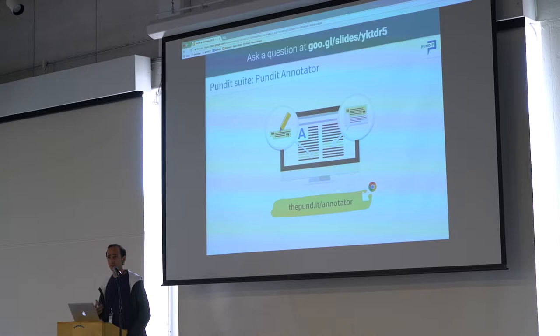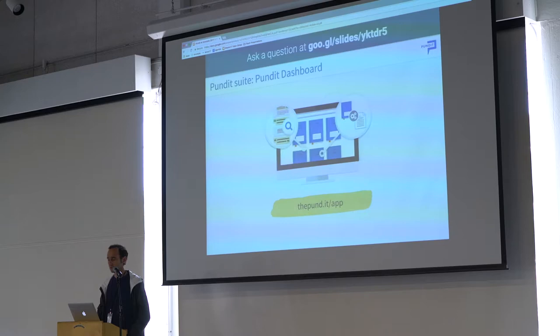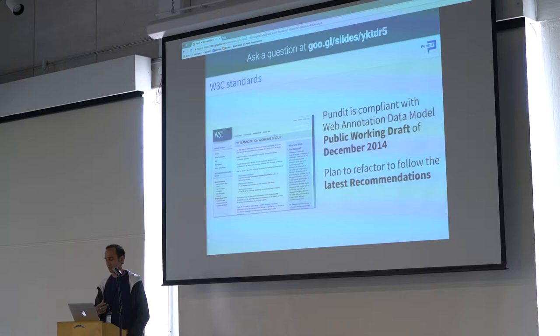Pundit is a suite of applications. We have the Pundit Annotator, which is the tool to highlight and comment on text; the Pundit Annotator Pro, which is the tool to build semantic annotations; and the Dashboard, which is the web application where you manage your annotations.